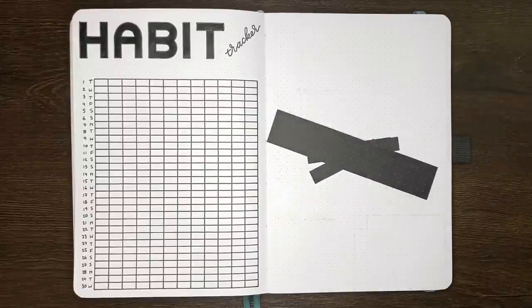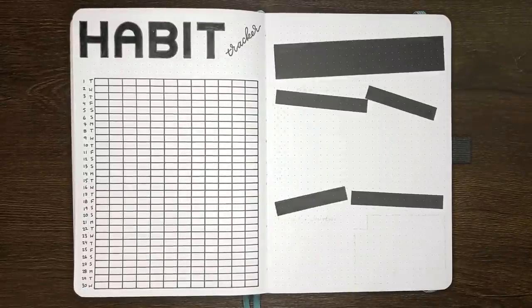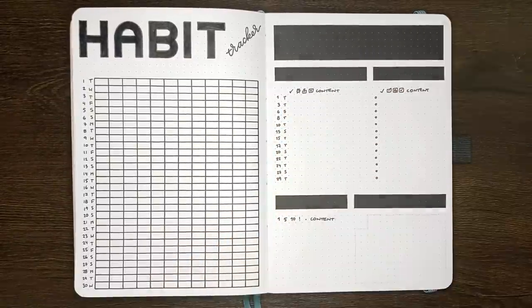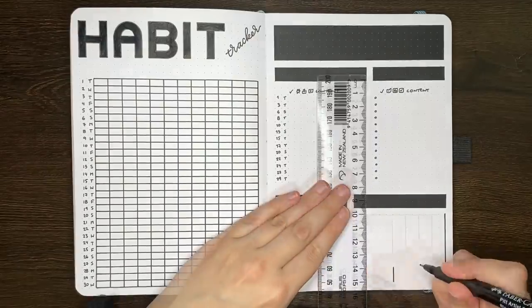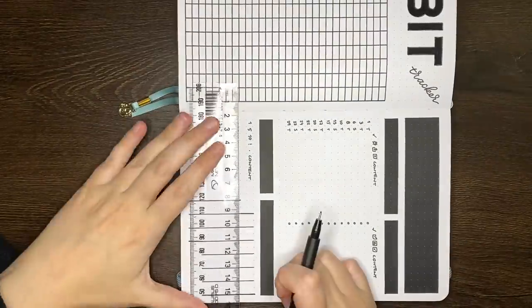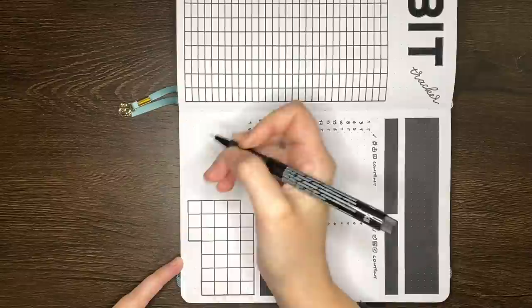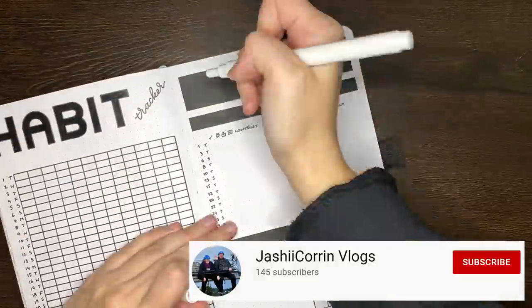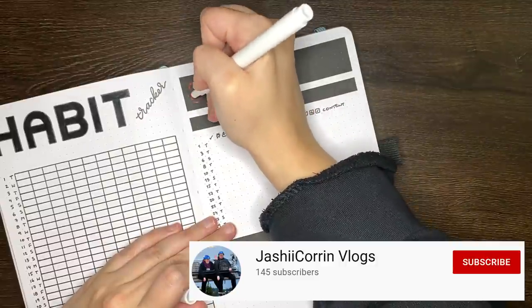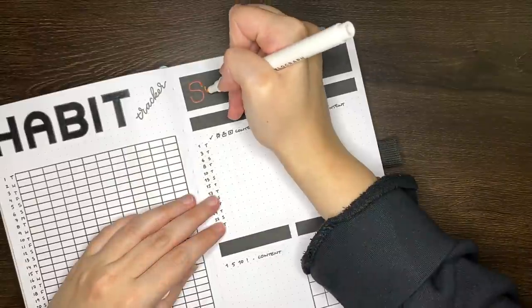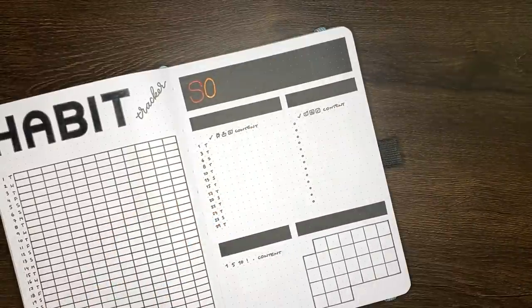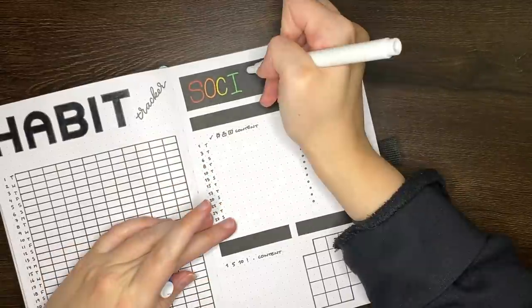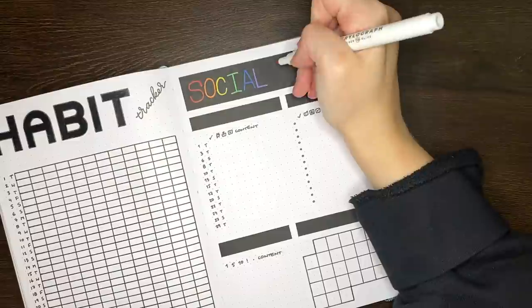On to my social media schedule page, which took 20 minutes. This one has the same layout as May, so sections for YouTube, Instagram, and Patreon, with a mini calendar in the bottom right. This would also be a good time to mention that I've recently started a new YouTube channel called Jashikurin Vlogs. As the name implies, this is where I'll now be posting my weekly vlogs, so if that's something you already enjoy watching, or wanted to check out, I've got a link to that channel in the description box below.